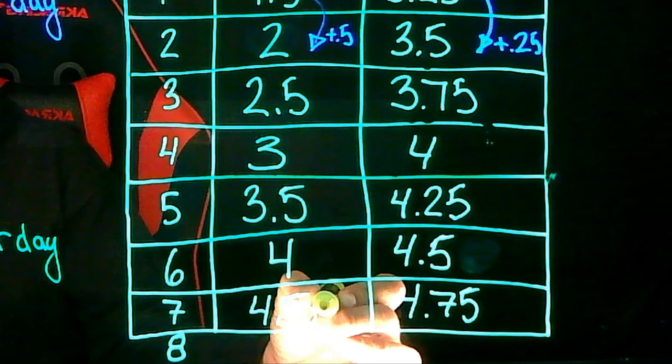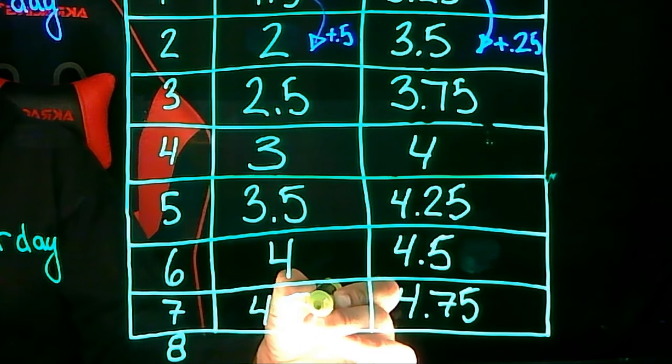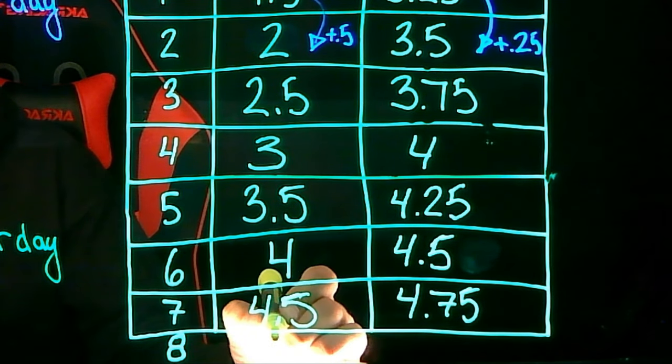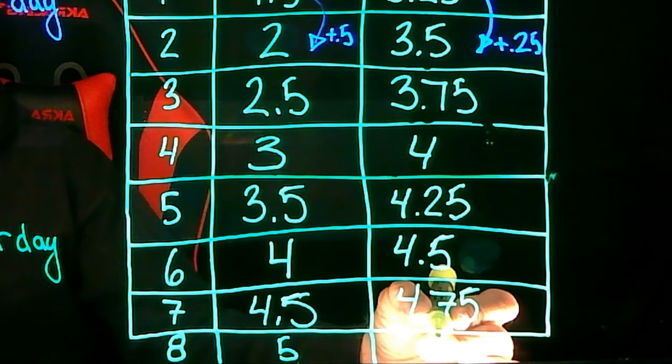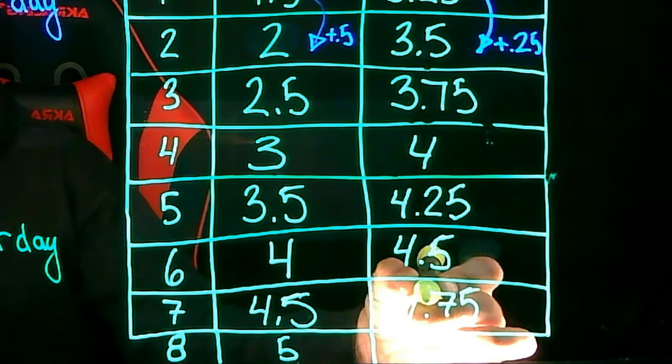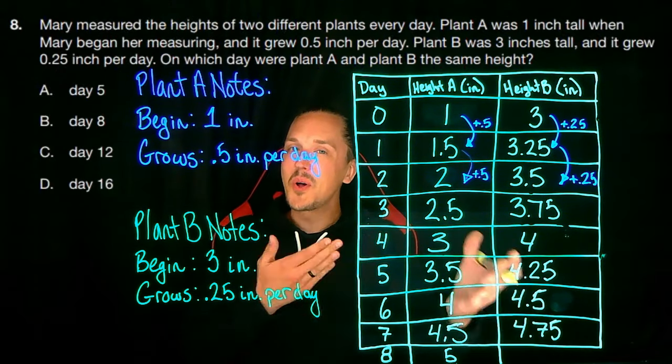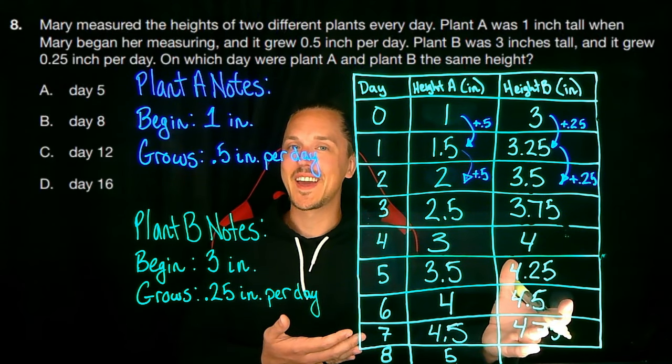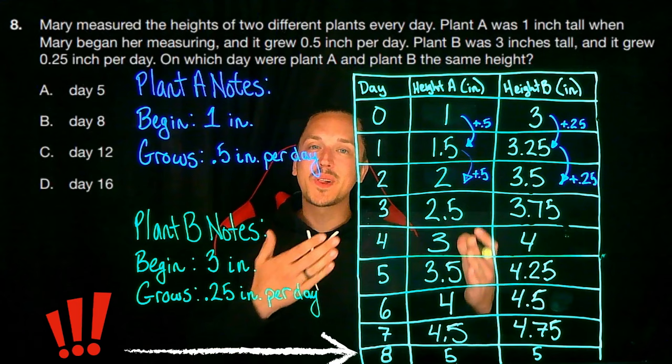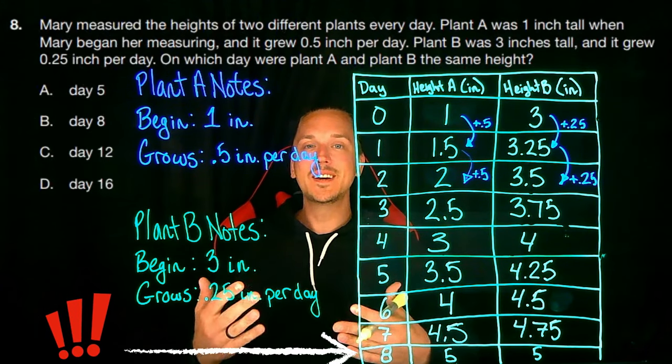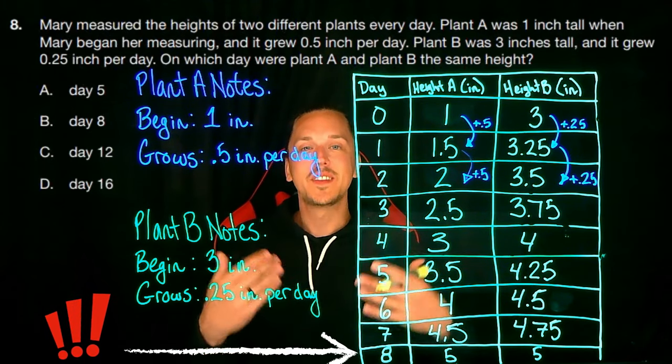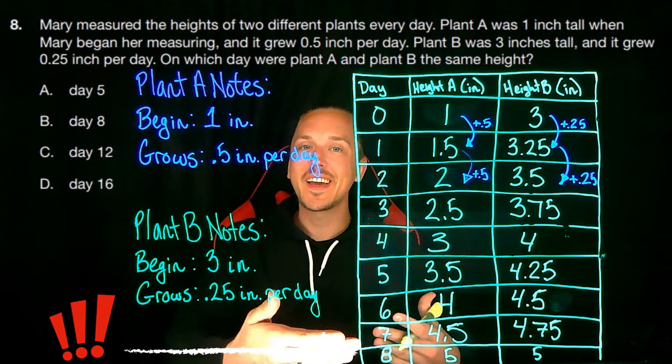And on day eight, plant A will be 4.5 plus 0.5 or 5 inches tall. And plant B will be 4.75 plus 0.25 or... wait, did you notice? Plant B will also be five inches tall on day eight. So the answer is that both plant A and plant B will be five inches tall, the exact same height, on day eight.